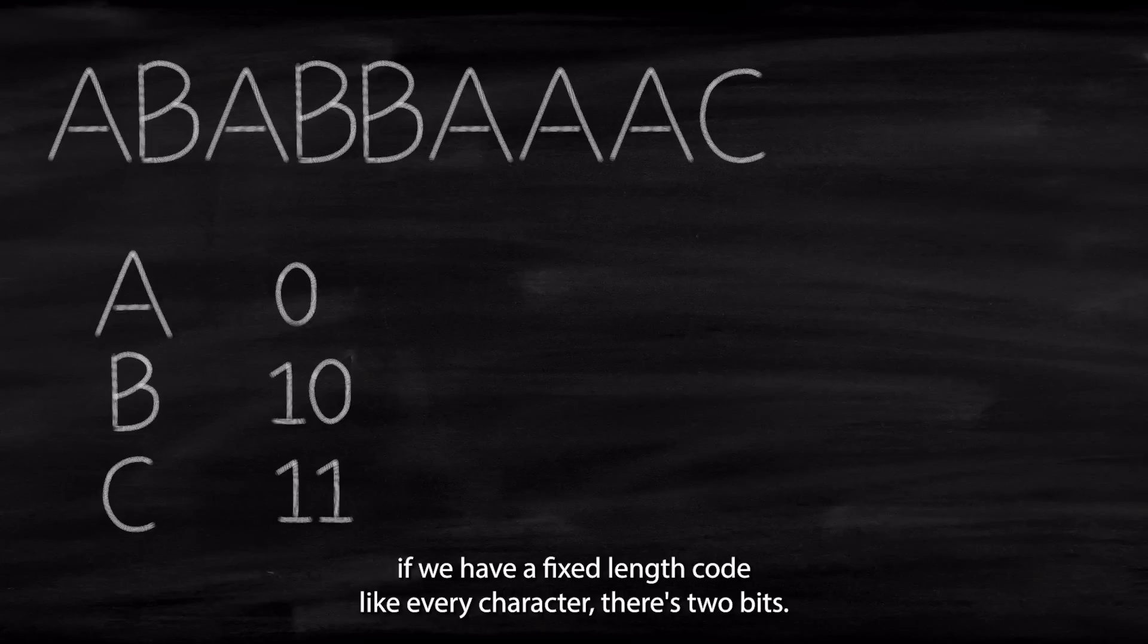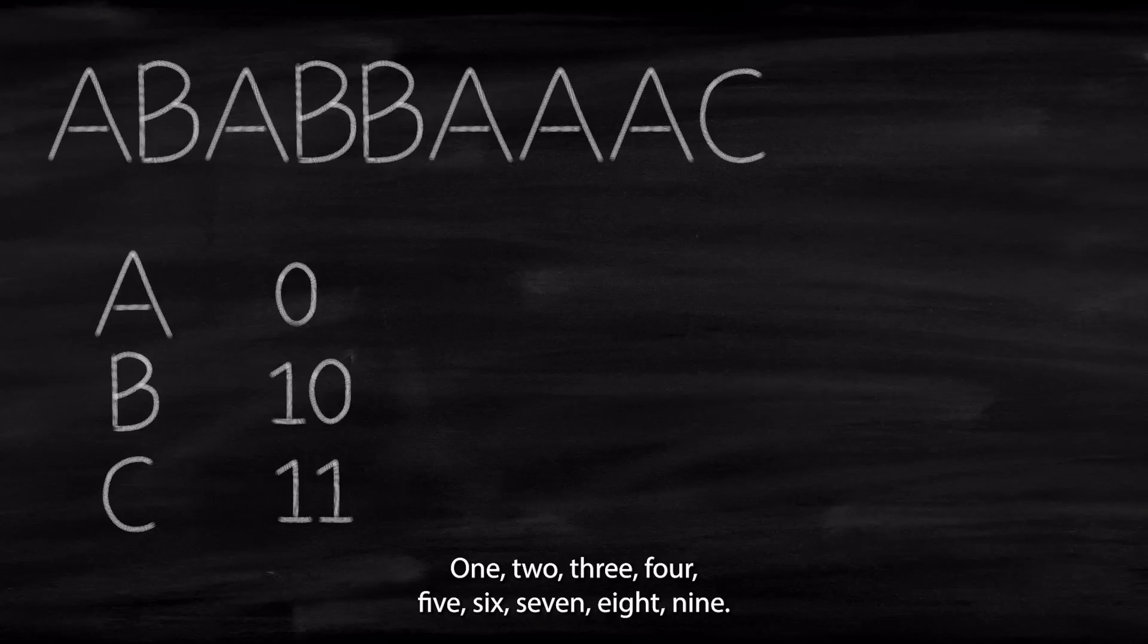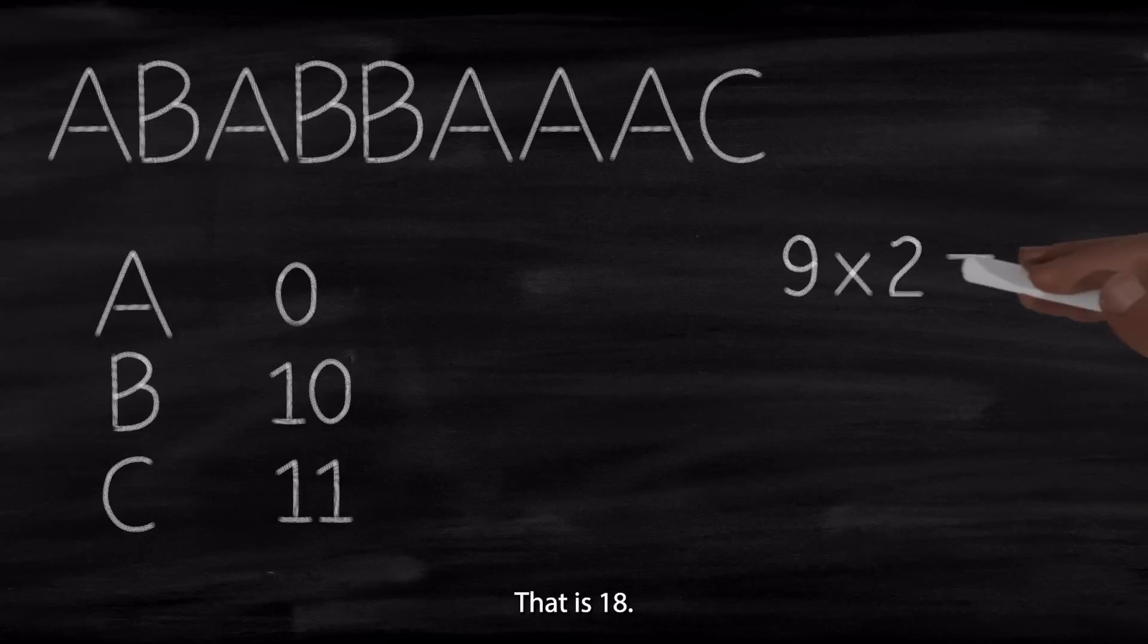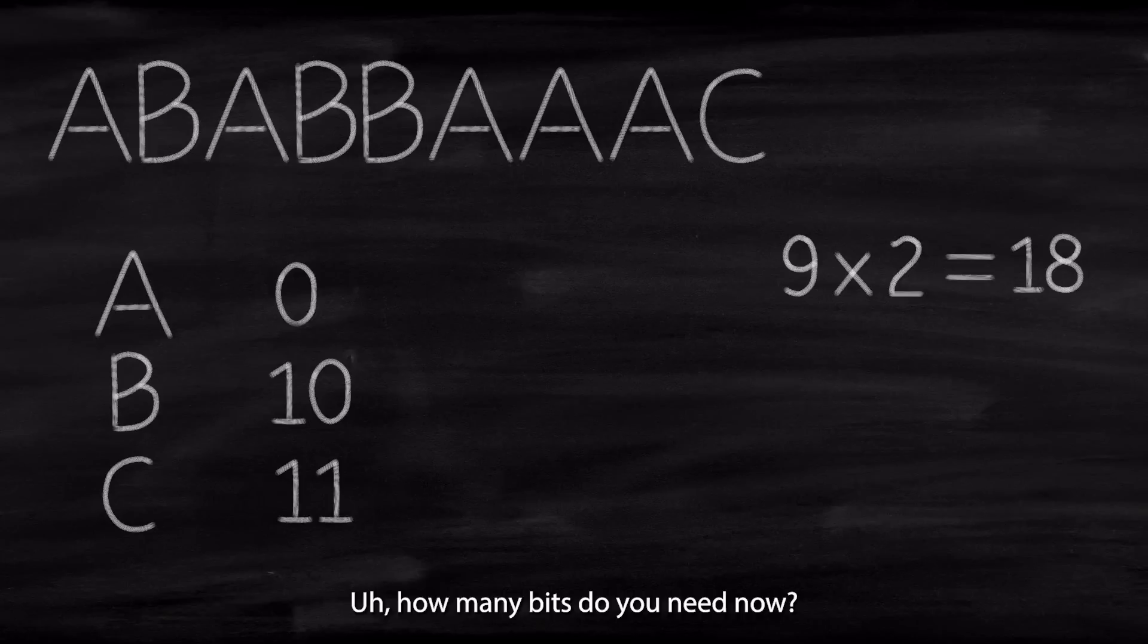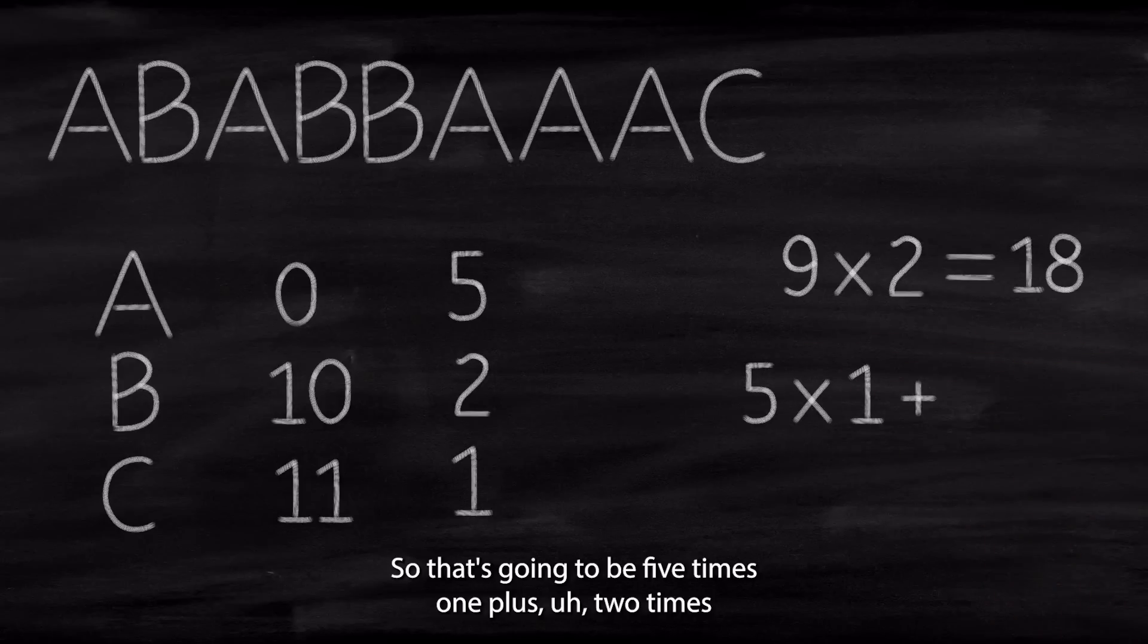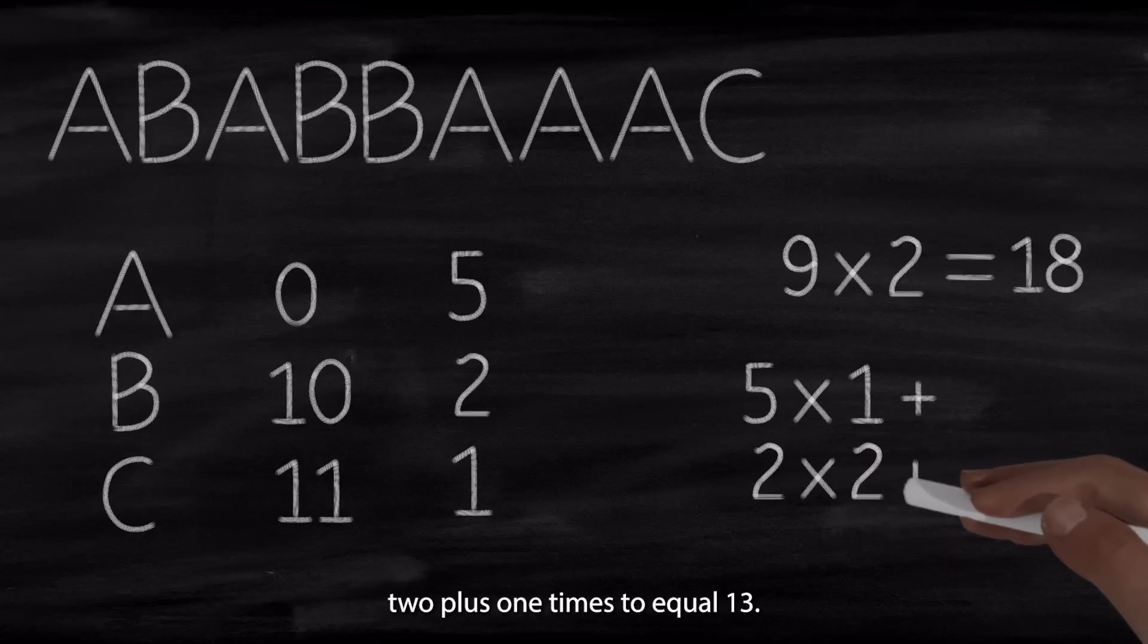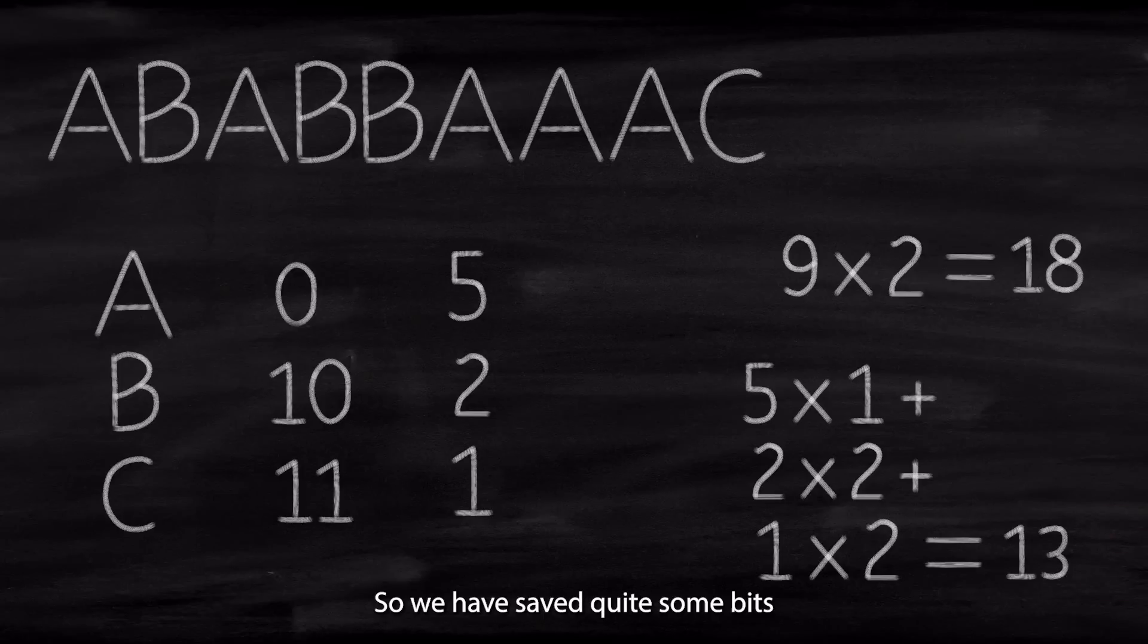And now, question. If we have a fixed length code, like every character is 2 bits, how many bits do we need? In this case, that would be 9 times 2. That is 18. How many bits do we need now, now that we applied a variable length? Let's calculate the frequencies. So A is occurring only 5 times. B occurs only 2 times. C occurs 1 time. So that's going to be 5 times 1 plus 2 times 2 plus 1 times 2 equal 13. So we have got 13 bits. So we have saved quite some bits.